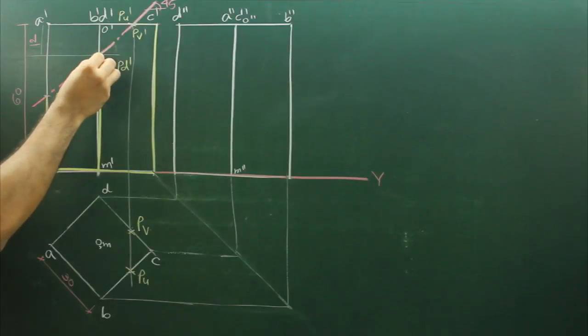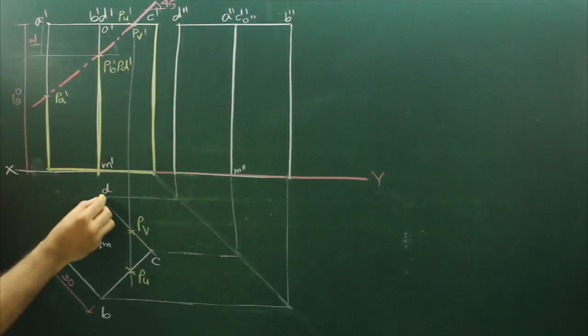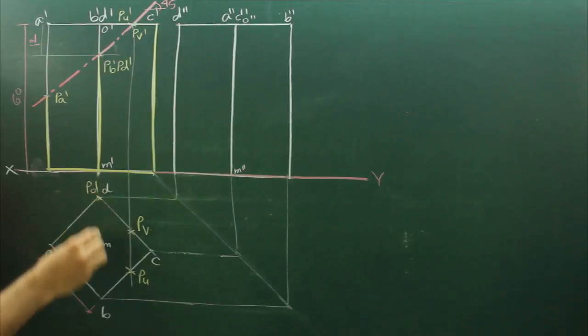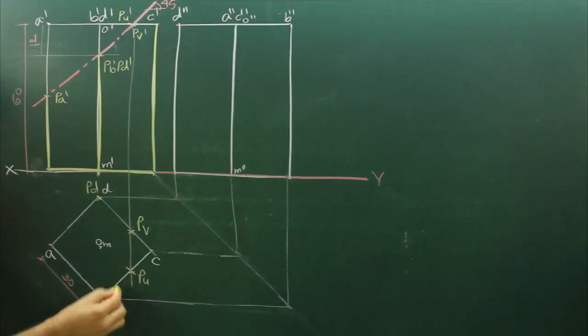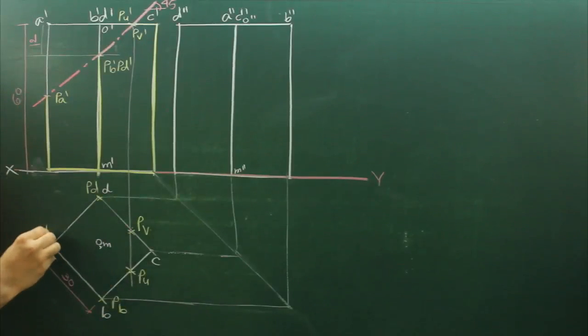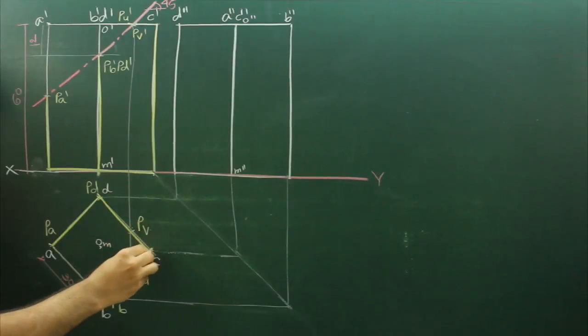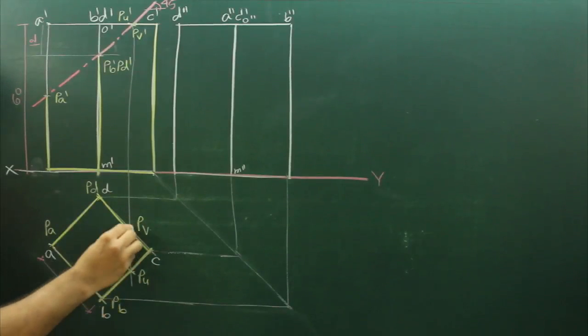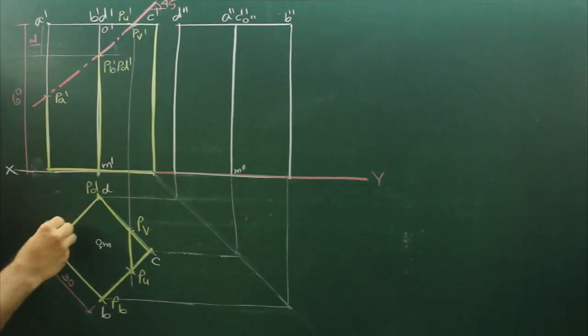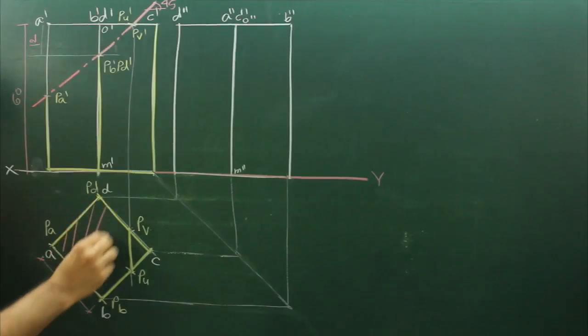After that, this point PB dash and PD dash, so that I will get over here, PD and PB. This point I will get over here, that is PA. This much portion will be hatched in top view.